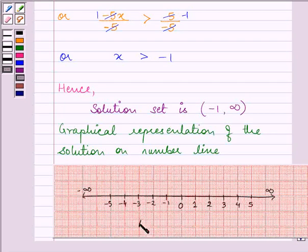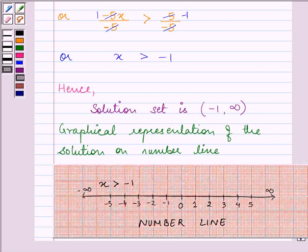Now, this is a number line on which we need to show the solution. That is minus 1 to infinity. So, when x is greater than minus 1, we will be having our solution as, on the graph, obviously, it will be from minus 1 to infinity.